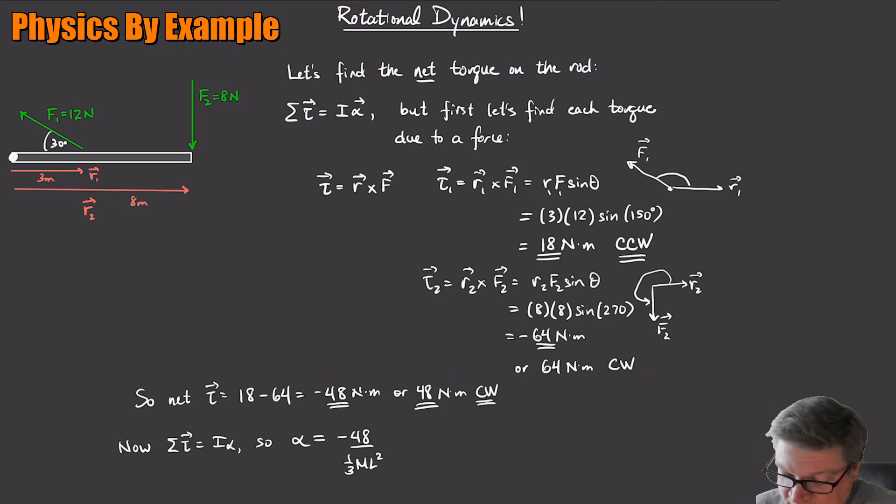And I mean, we could just put some numbers on it if we want. What did I use here? Let's say mass of the rod is five kilograms. And the length of the rod, we already said, was like eight meters. So if you put those things in there, what you're going to get is like minus 0.45 radians per second squared. So that's how we can figure out the angular acceleration of this thing as it starts out.